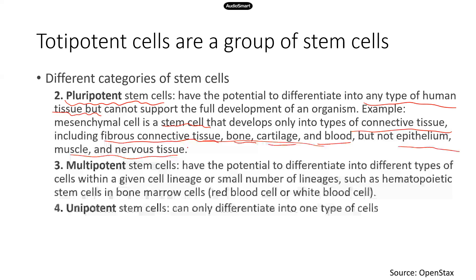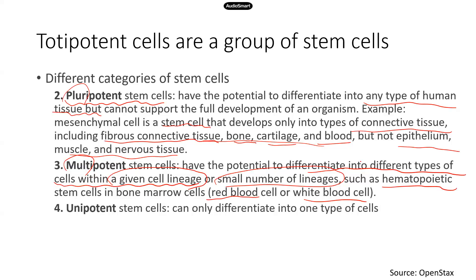The next level is multipotent stem cells. Both 'pluri' and 'multi' mean several or multiple, but multipotent cells are a level below pluripotent stem cells. Multipotent cells can only differentiate into different types of cells within a specific cell lineage or a small number of lineages. For example, hematopoietic stem cells in the bone marrow can only differentiate into red blood cells and white blood cells — they can't differentiate into other types of cells. So it's a specific cell lineage.